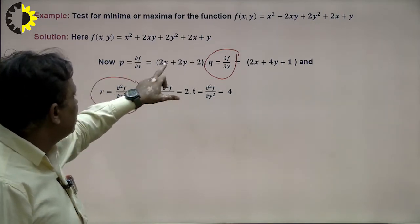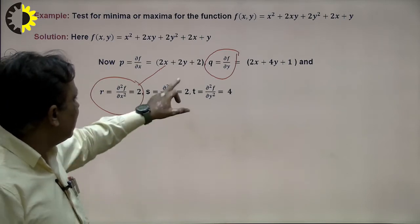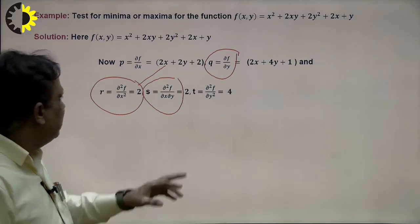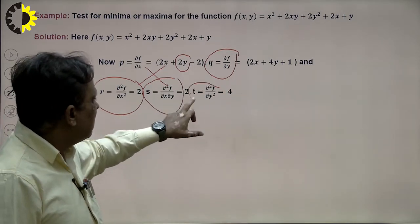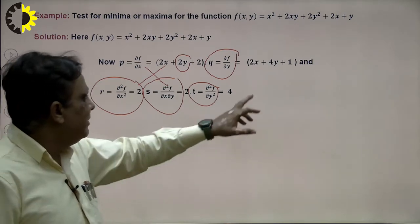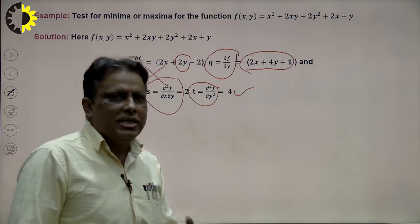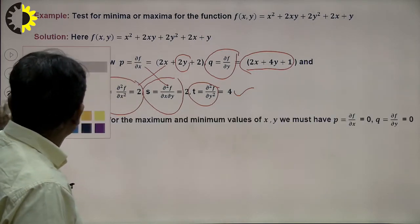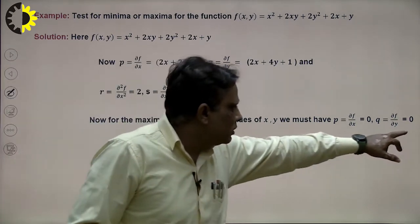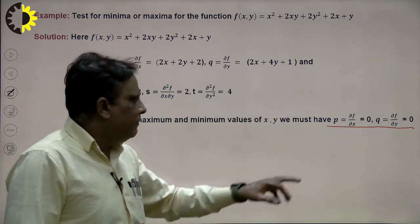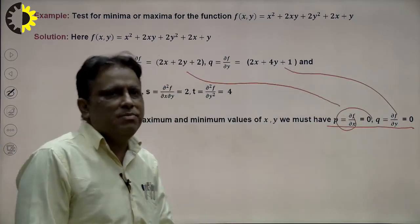For the maxima and minima, first derivative should be 0. We calculate r, s, t. r is the second derivative: differentiating ∂f/∂x with respect to x gives r = 2. s = ∂²f/∂x∂y: differentiating with respect to y gives s = 2. t = ∂²f/∂y²: differentiating with respect to y gives t = 4. So r = 2, s = 2, t = 4.